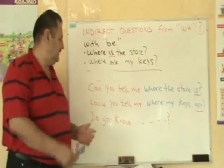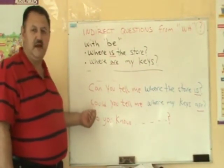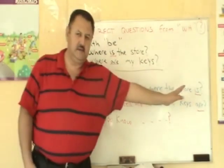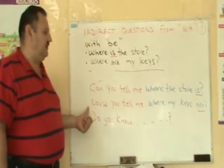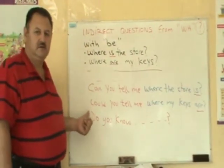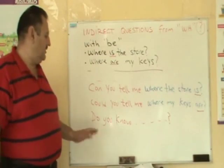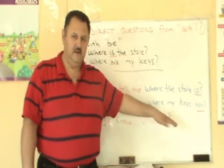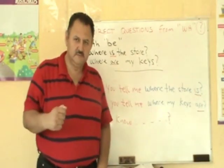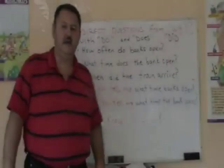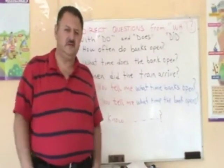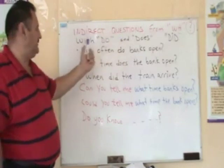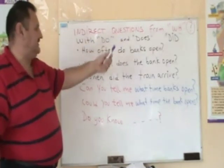Ok, se fijaron — le agregamos la expresión, we add the expression, and the verb to be goes to the end. Could you tell me where my keys are? Do you know where my keys are? Let's continue with indirect questions from WH questions with do, does, and did.